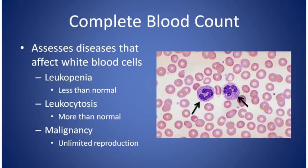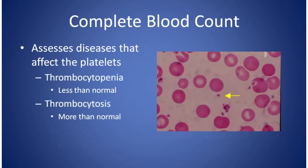Leukopenia means fewer than the normal number of white blood cells. Leukocytosis means more than the normal amount of white blood cells, and can result from infection. Malignancy is where a component of the white blood cells grows without limit — an example is leukemia. Finally, the CBC assesses diseases of the platelets, these tiny blood cells important in forming blood clots.